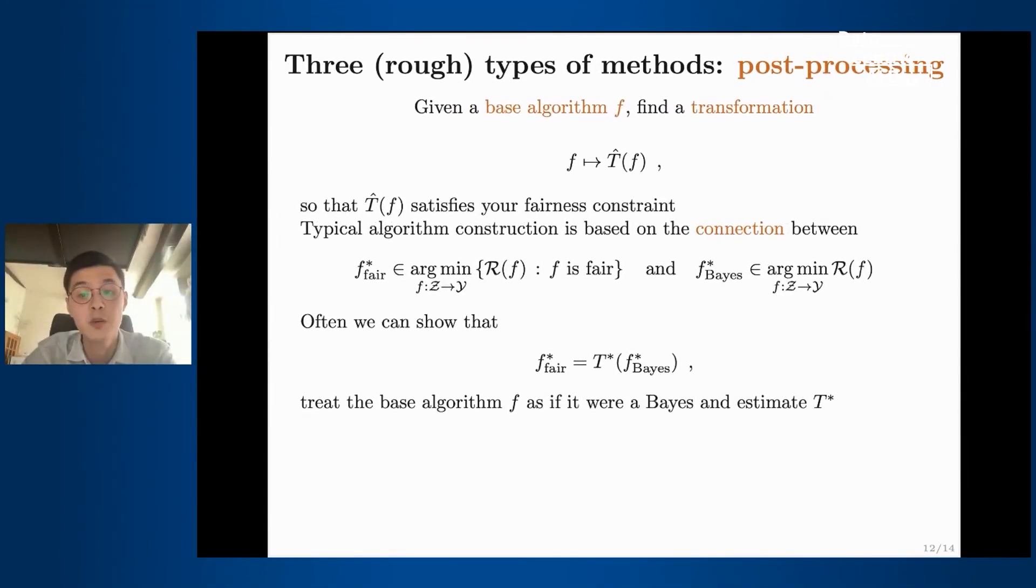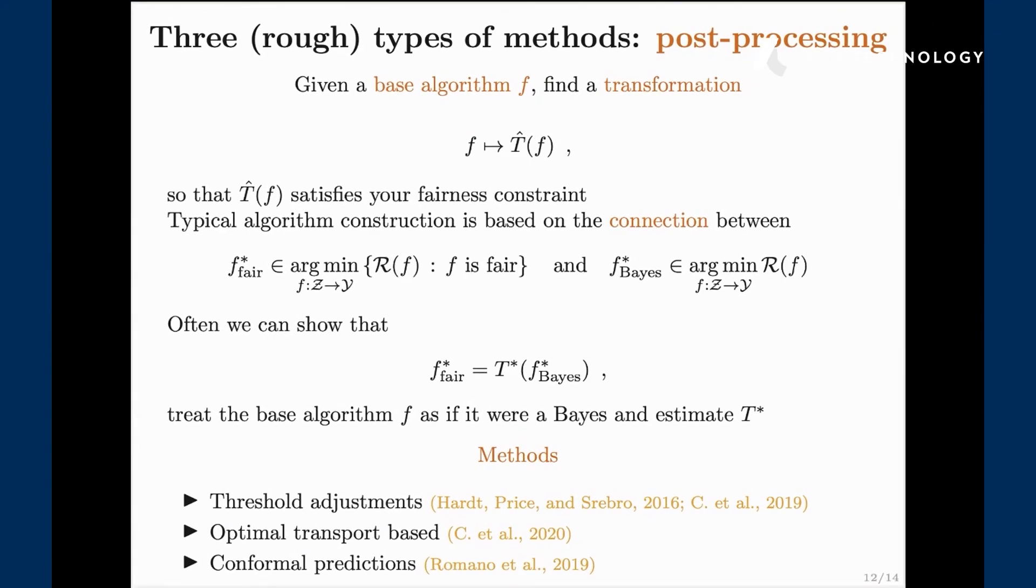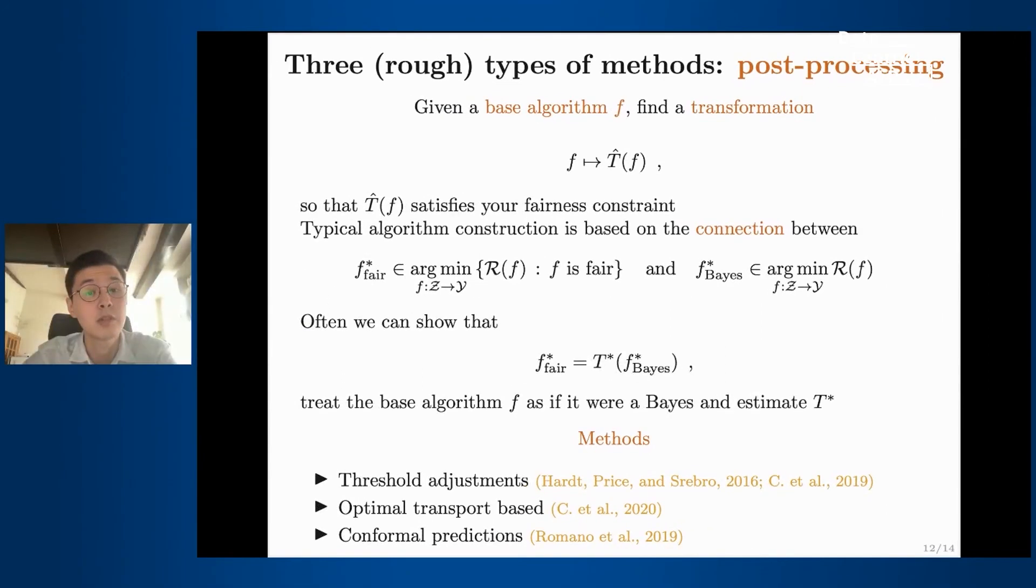The first one is f star fair, which is just a prediction function that minimizes the risk under the fairness constraint, and f star base which minimizes the risk without any constraint. Typically if you did not think about fairness before then your current algorithm tries to mimic f star base. Right now if you're able to establish a link between the two you can construct this kind of transformation and transform your current algorithm into something more fair and potentially improve guarantees about that. For instance in the case of binary classification it often amounts to a threshold adjustment. You just need to find a good threshold for the algorithm that outputs a number between zero and one in order to make a fair classification. For more complicated problems like regression we typically explore some connections between fairness criterias and optimal transport, in particular with Wasserstein distance, or it can also be based on the connection with conformal prediction type literature using rank and order statistics.